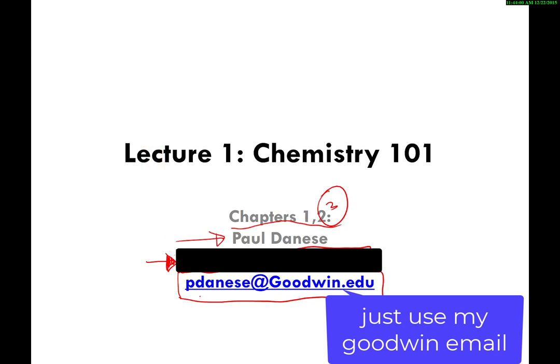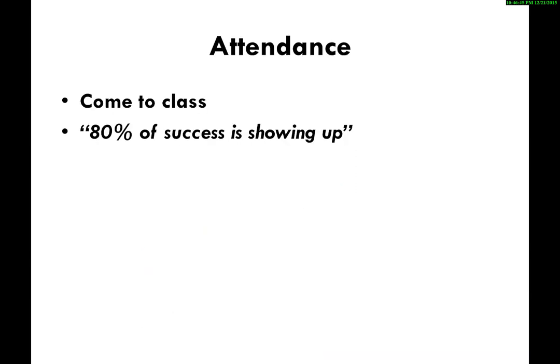If you send an email to my Goodwin.edu email address, it will be automatically forwarded to my personal slash business email address, so I will see it as soon as I check my regular email. The only reason I mention both of them is that if you're expecting an email from me, you should be on the lookout for an email from the top address and not the bottom address.